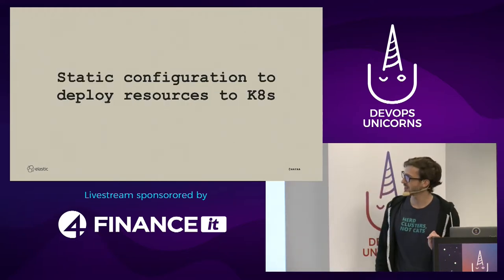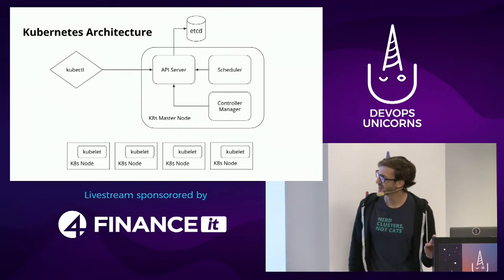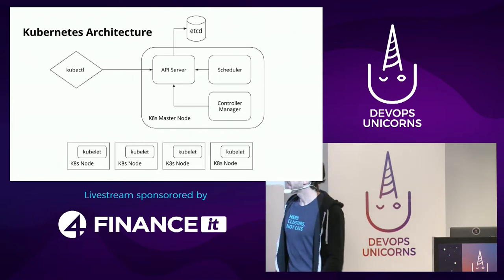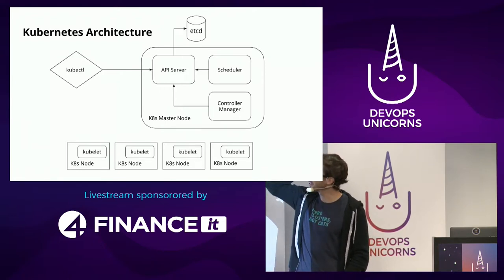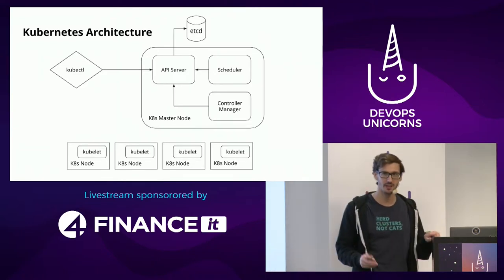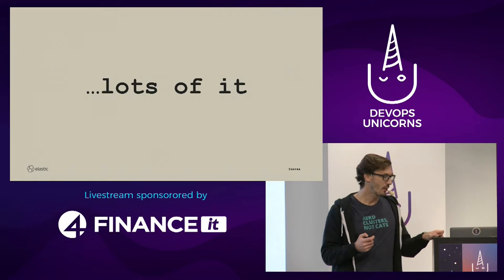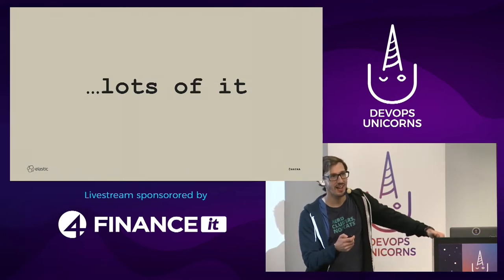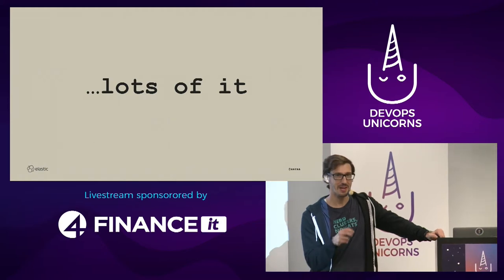What you generally get with Kubernetes is a static configuration to deploy your resources. You use kubectl to interact with the API server, you store your state in etcd, you have your controller manager talking to your API server, and then you have the kubelets on your Kubernetes nodes which actually do the work. That's the general architecture everybody has seen quite a few times. And what you get with that is YAML — lots of YAML.